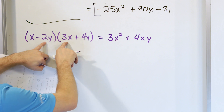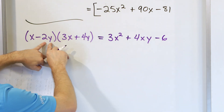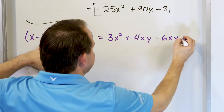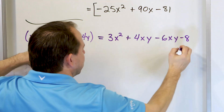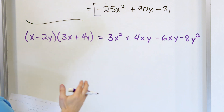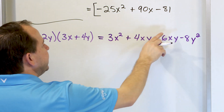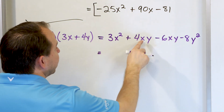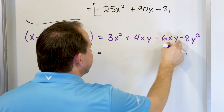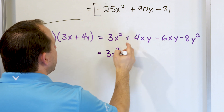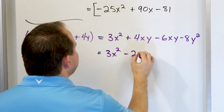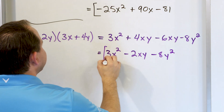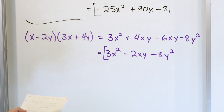The inner terms: negative 2 times 3 gives negative 6xy. The last term: negative 2 times positive 4 gives negative 8, and y times y gives y squared. We can combine 4xy and negative 6xy: 4 plus negative 6 gives negative 2xy. So the answer is 3x squared minus 2xy minus 8y squared.